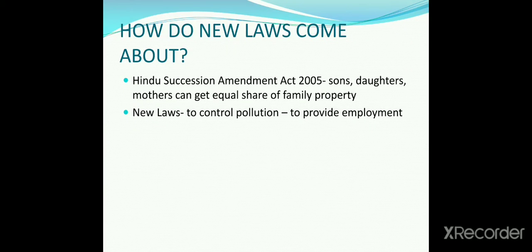Hello students, welcome to Part 2 of the lesson. Let us see how new laws come about. The Hindu Succession Amendment Act 2005 states that sons, daughters, and their mothers can get an equal share of family property. Similarly, new laws have been enacted to control pollution and to provide employment to the people.